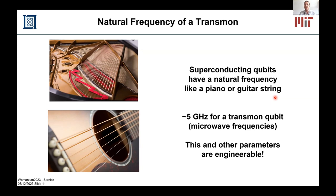For the rest of the talk I'm going to focus on transmon qubits because they're so simple. We're just replacing the inductor of a harmonic oscillator with a Josephson junction, so you can use any intuition you have for LC oscillators or any harmonic oscillator to describe at least some properties of the transmon. Something important to note is that superconducting qubits will have some natural frequency, just like when you pluck a guitar string or play a note on the piano — there's a fundamental frequency that they will interact with. This is tunable by those parameters. For some energy scale, transmon qubits work at about five gigahertz, which is what we call a microwave frequency on the electromagnetic spectrum. By choosing different aspects of the circuit, the fundamental frequency and other properties are engineerable.